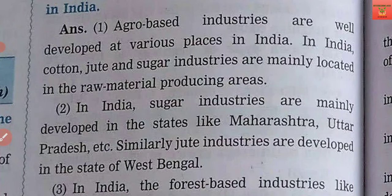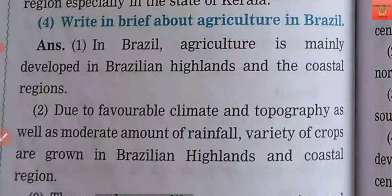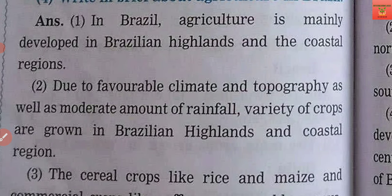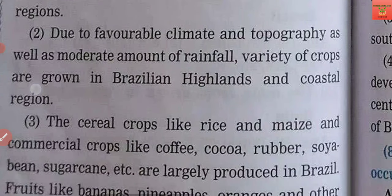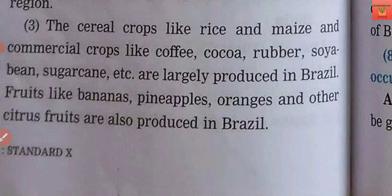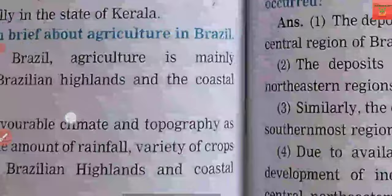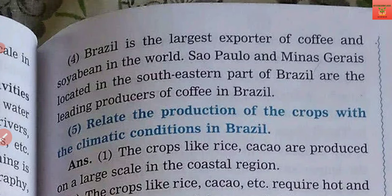Next question: write in brief about agriculture in Brazil. Brazil's highlands and coastal regions are more suited to agriculture. The climate and topography provide moderate rainfall, so crops grow well in the highlands. Major cereal crops include rice and maize. Commercial crops include coffee, cocoa, rubber, soya bean, and sugar cane. Brazil is particularly well-known for bananas, pineapple, oranges, and other citrus fruits. As we saw in the previous chapter, Brazil is the largest exporter of coffee in the world.